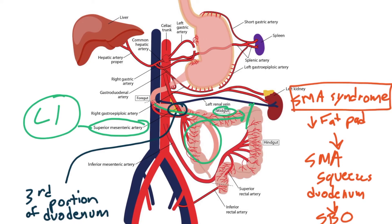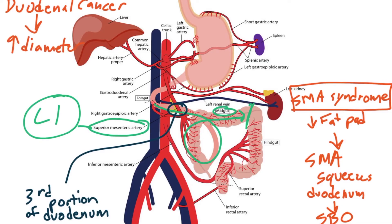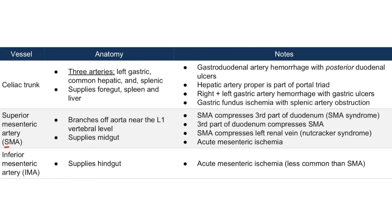Now we've discussed how the SMA can negatively impact the third portion of the duodenum, but how can the third portion of the duodenum negatively impact the SMA? If a patient has a cancer in the third part of the duodenum that greatly enlarges its diameter, this causes the duodenum to press up against the SMA, potentially occluding it and leading to ischemia of downstream midgut structures.